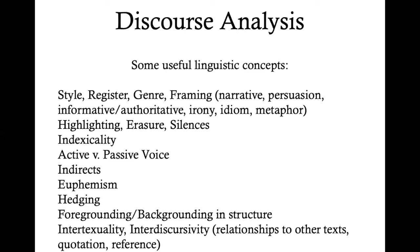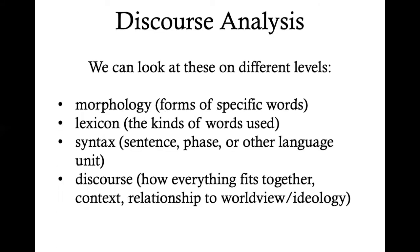And then finally, intertextuality and interdiscursivity — the relationship of this text to other texts or other discourses. We can look at all of these things on different levels: morphology (the form of specific words), lexicon (the vocabulary, the kinds of words used), syntax (language at the level of a phrase or sentence), and then discourse — how everything fits together, how it sits in a particular context, and what its relationship is to worldview and ideology.